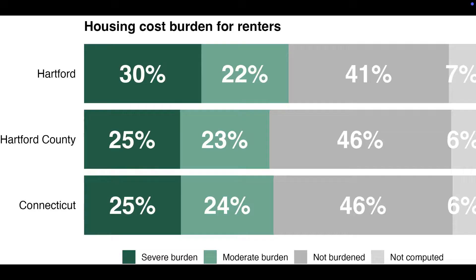If you've ever made a stacked bar chart in ggplot, you may have run into an issue where the text labels you add go outside of the bars. What you're looking at here is a chart that shows the housing cost burden for renters in Hartford, Hartford County, and Connecticut. Take a look all the way on the right side at the not computed bars — see how those text labels go outside of the bars. That's not great. This is a bad version of a real chart we made for a set of reports on housing and demographic data in the state of Connecticut.